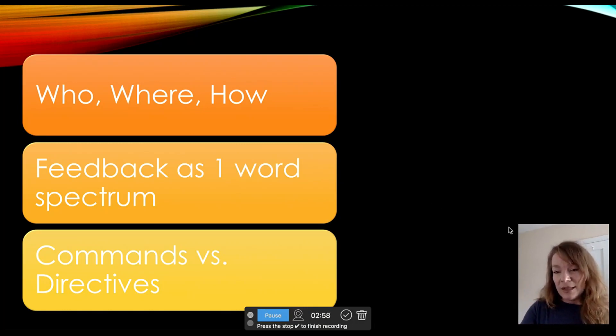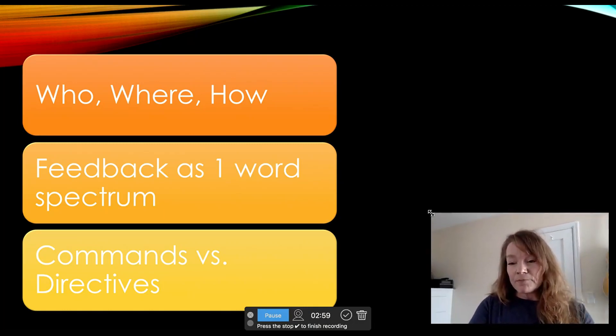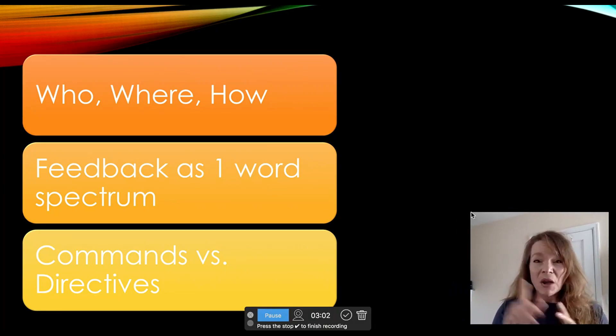The spectrum goes from really not good to that was really excellent. For example, really not good would be nope. Really excellent would be yes. Some spectrum in the middle would be good or try again or you're on to something.